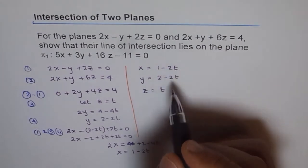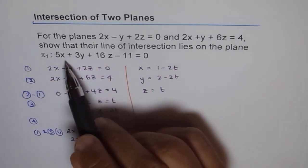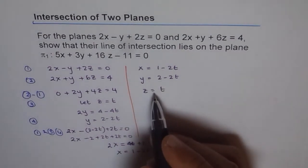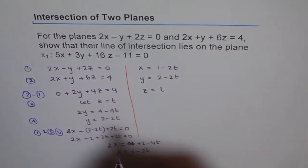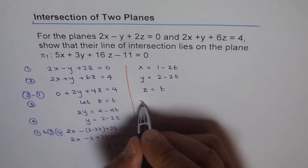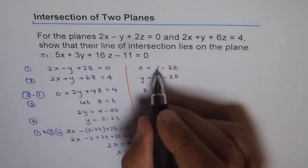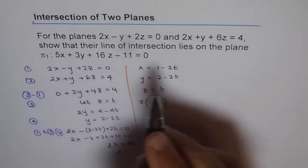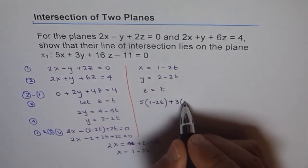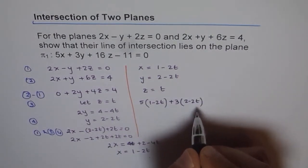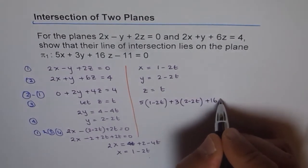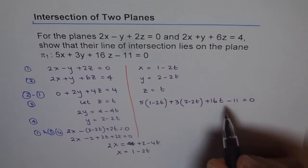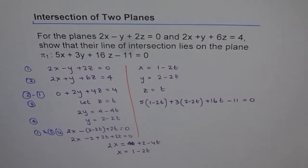To show that, I need to plug in these parametric values into the plane equation. So I do 5 times (1 minus 2t) plus 3 times (2 minus 2t) plus 16t minus 11 equals to 0, and let me see what value of t satisfies it.